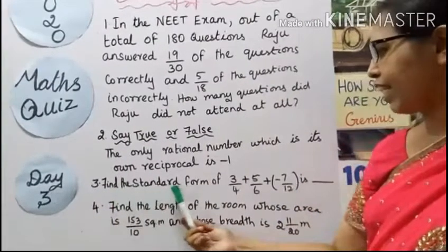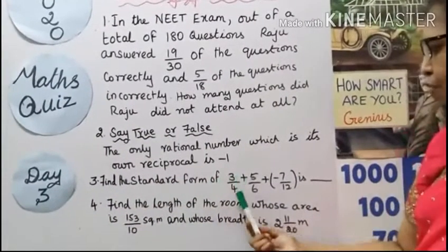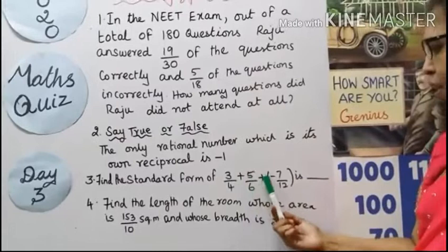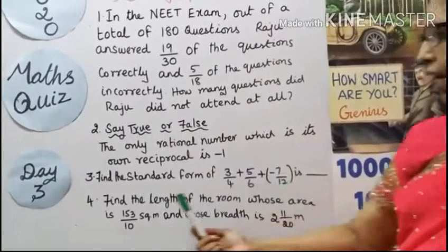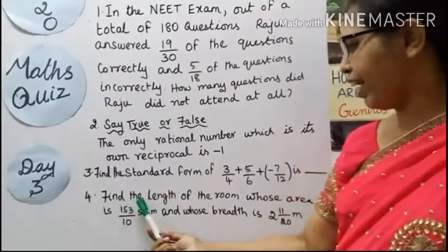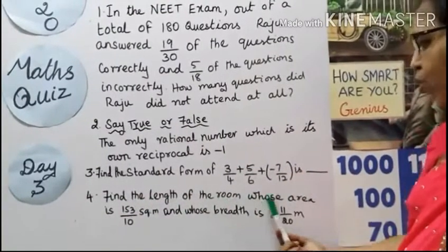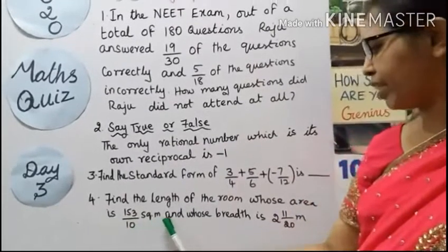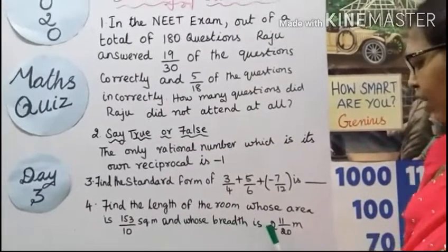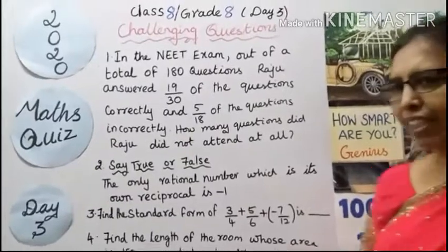Third question, find the length of the room whose area is 153 by 10 square meters and whose breadth is 211 by 20 meters.